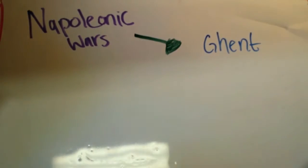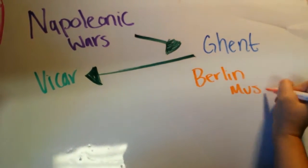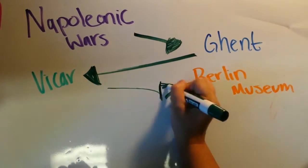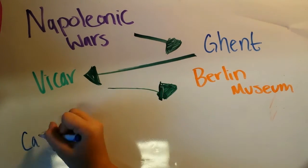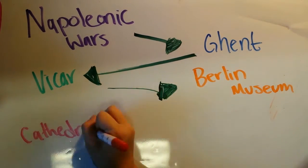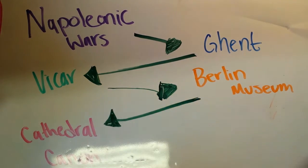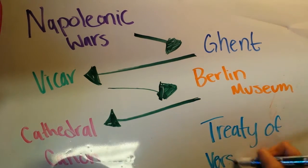It was then stolen during Napoleonic Wars, then returned back to Ghent. After that, it was sold in parts after a vicar in St. Bavo stole it. It ended up in the Berlin Museum after it was sold several times. It went into hiding by a cathedral canon during World War I. The Treaty of Versailles brought the piece together again in St. Bavo Ghent.